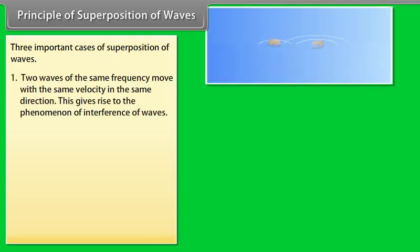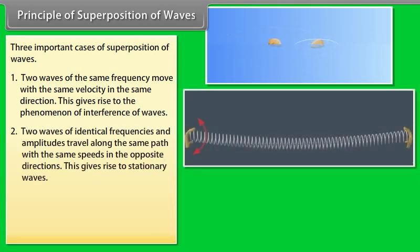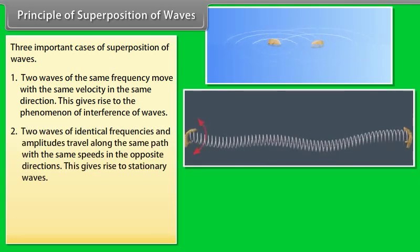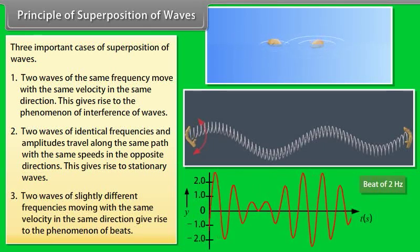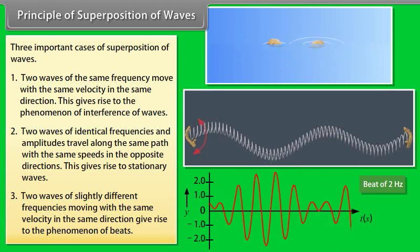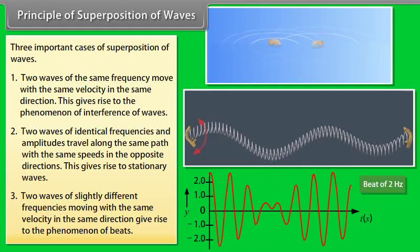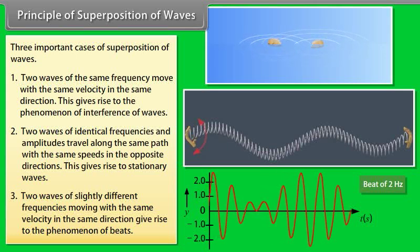Number 1: Two waves of the same frequency moving with the same velocity in the same direction gives rise to the phenomenon of interference of waves. Number 2: Two waves of identical frequencies and amplitudes travelling along the same path with the same speed in opposite directions gives rise to stationary waves. Number 3: Two waves of slightly different frequencies moving with the same velocity in the same direction gives rise to the phenomenon of beats.